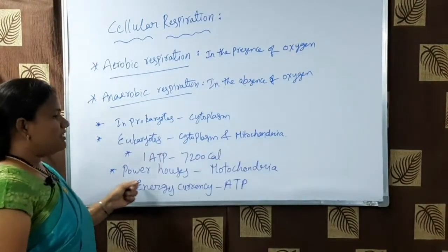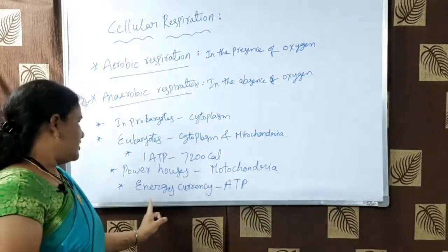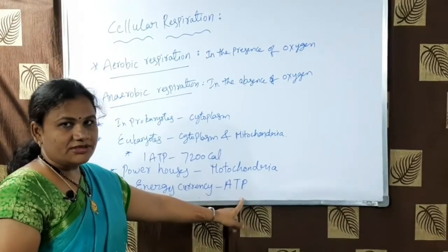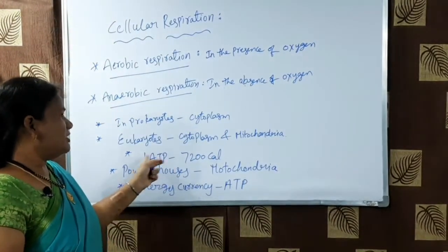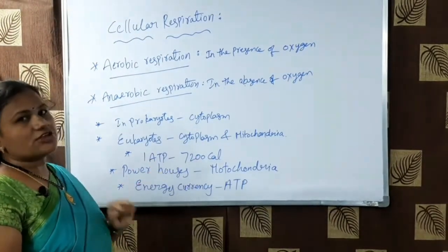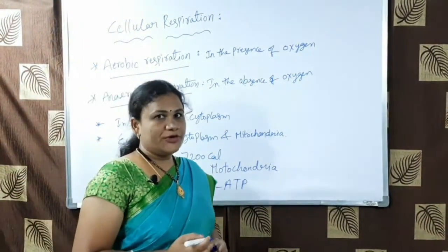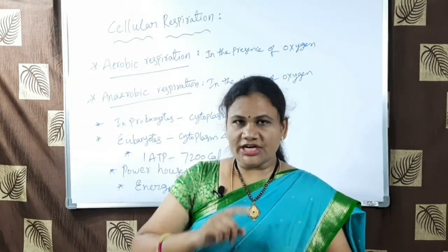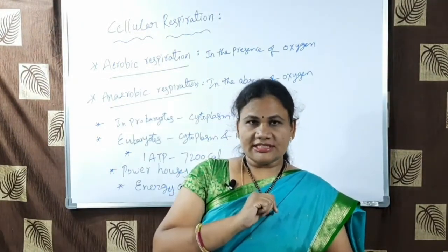From each ATP, 7000 calories of energy is produced. Powerhouses of the cell are mitochondria, and the energy currency is ATP.